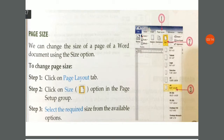To change the page size, follow three simple steps. First, click on the Page Layout tab. Second, click on the size option in the Page Setup group. Third, select the required size from the available options — choose whichever page size you want.